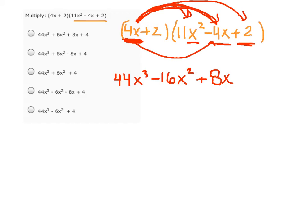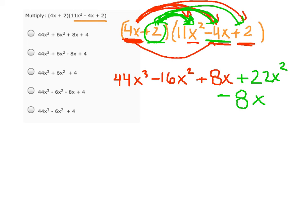The next step we need to do is take this 2 and distribute into each term as well. So we have 2 times this first term, 11x squared. So we're going to add that on. 2 times 11x squared gives us 22x squared. And multiplying the second term, we have 2 times negative 4x. So that gives us negative 8x. And 2 times 2 gives us 4.